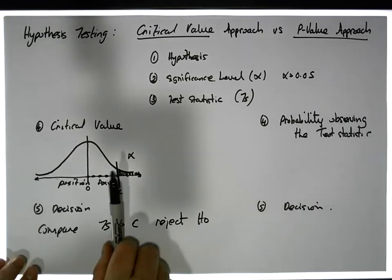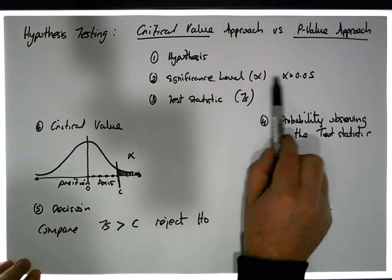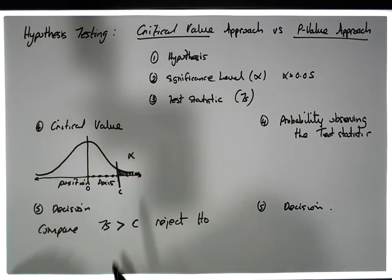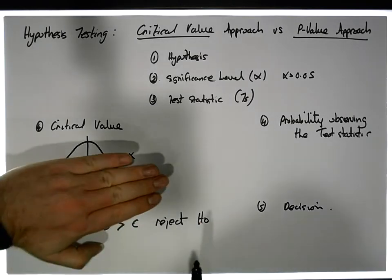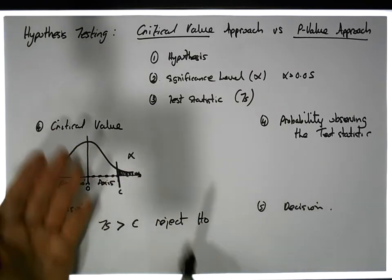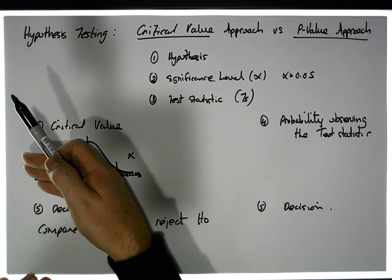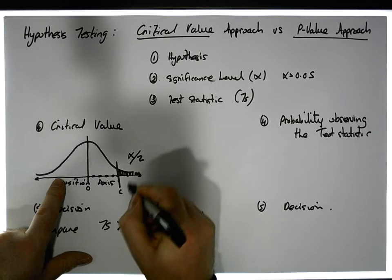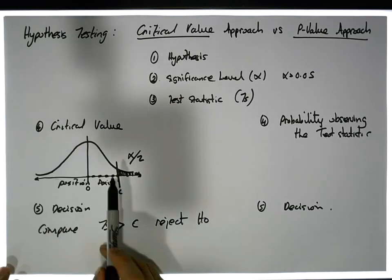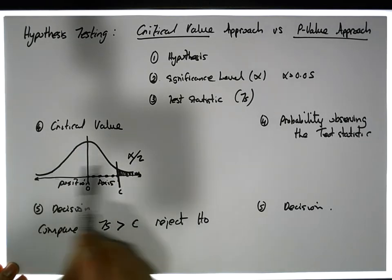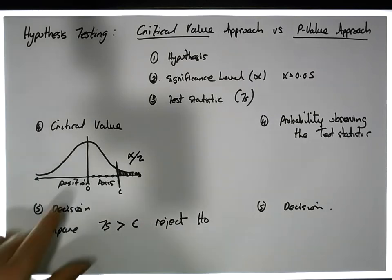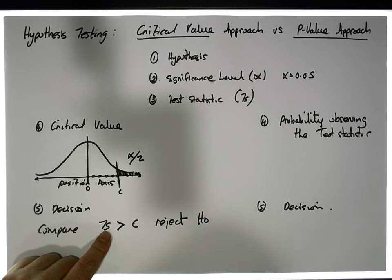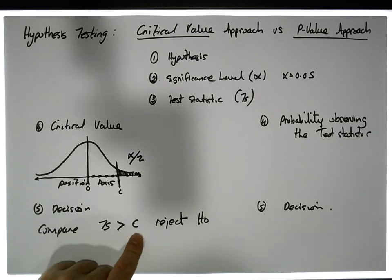The critical value defines a position along the axis that has the significance level in its right-hand tail for a right-hand tail test. The argument is exactly symmetrical for a left-tail test. For a two-tail test, we put alpha over two in each tail. This is typically symmetrical due to the distribution, though not always. We compare the magnitude of the test statistic to the critical value.